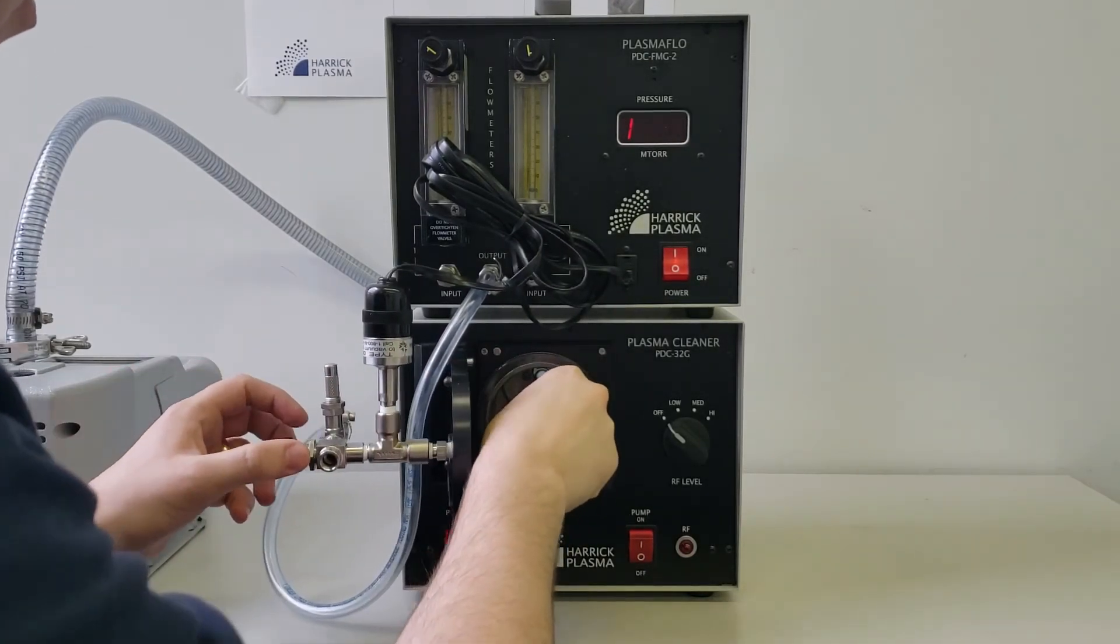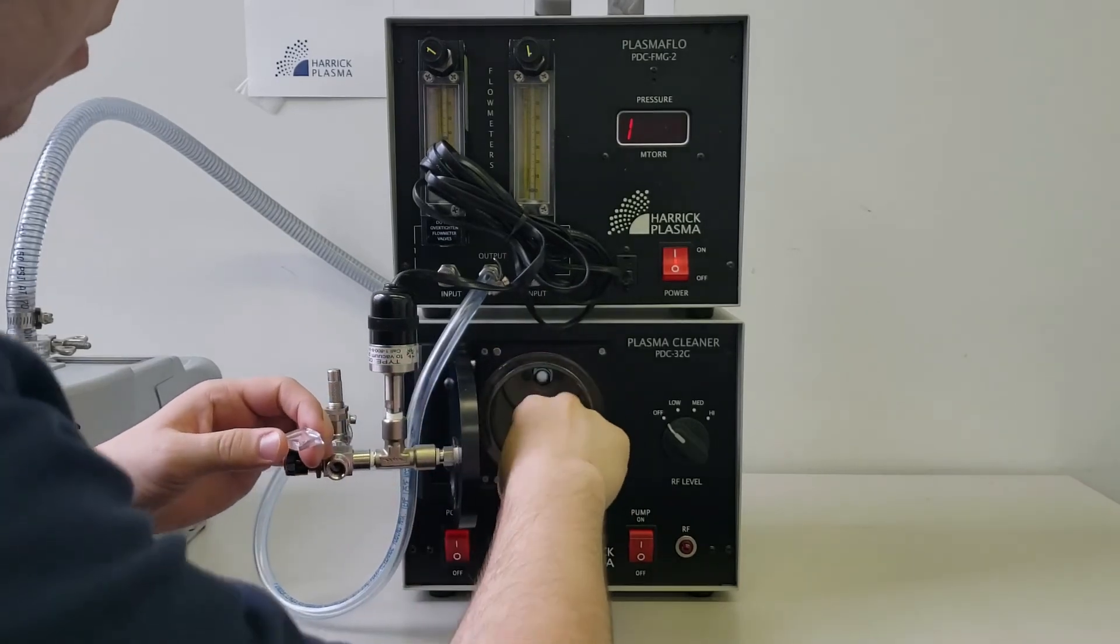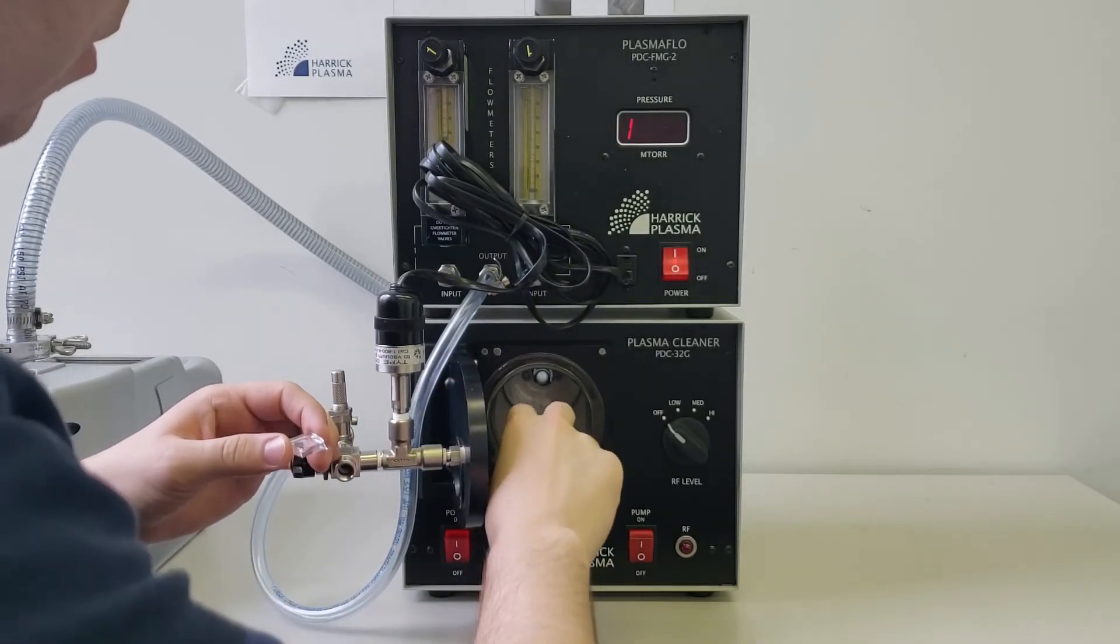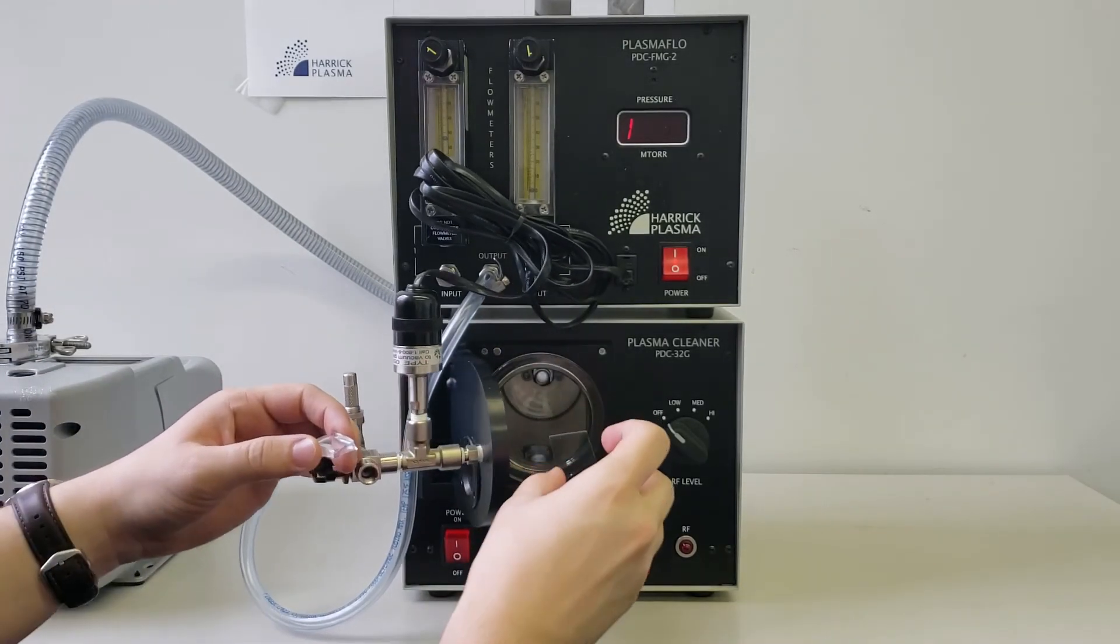When removing the PDMS from the plasma cleaner, do not touch the surfaces to be bonded. This can transfer particulates or oil that can block covalent bonds from forming.